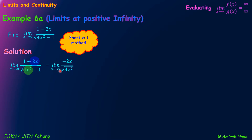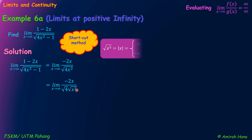The limit as x approaches infinity of negative 2x over the square root of 4x squared. After that, we can write this as the limit of negative 2x, and from the square root of 4x squared, we can separate it using the properties of radicals: square root of 4 times square root of x squared. Now, square root of x squared equals the absolute value of x, that is, modulus x.